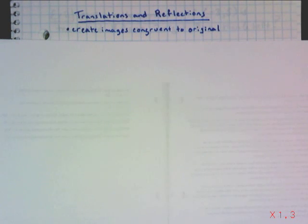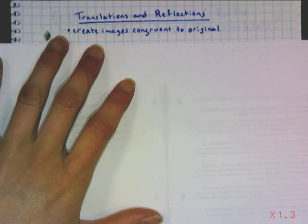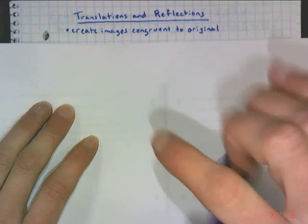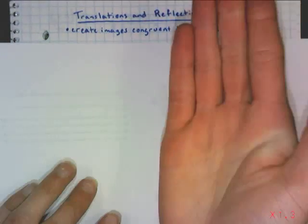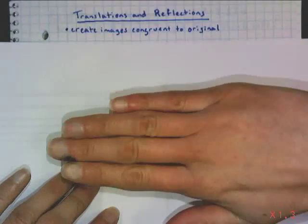A transformation is something that has been done to a figure to result in the image of another figure. With translations, you might remember this as just a slide. And a reflection is kind of a mirror image of itself.